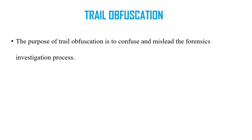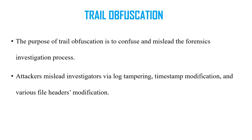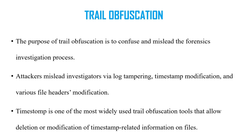Next one is trail obfuscation. The purpose of trail obfuscation is to mislead or confuse the forensic investigation process. The investigator is misled by the attacker via log tampering, timestamp modification — that is metadata alteration — and file header modification. Attackers use tools like Timestamp to modify the timestamp of the file, changing the file creation, modification date and time. With the help of this, attackers can hide their activities.